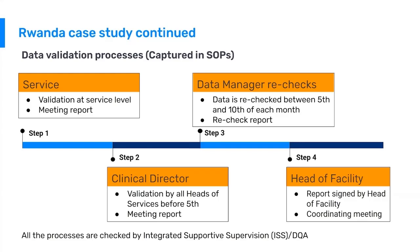Finally, in step four, the head of the facility signs a report confirming that data has been checked through the three previous steps. At that point there's a coordinating meeting where the data is reviewed again and everyone agrees the data is clean and ready to be submitted. Rwanda also has an organization called Integrated Support and Supervision that supports this process and checks to make sure the process is being followed.